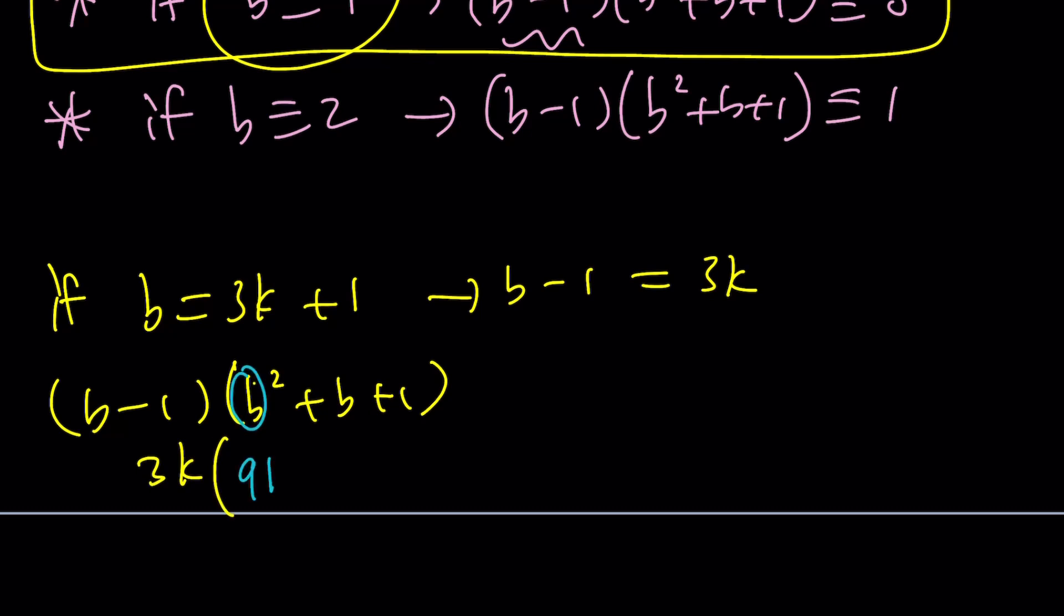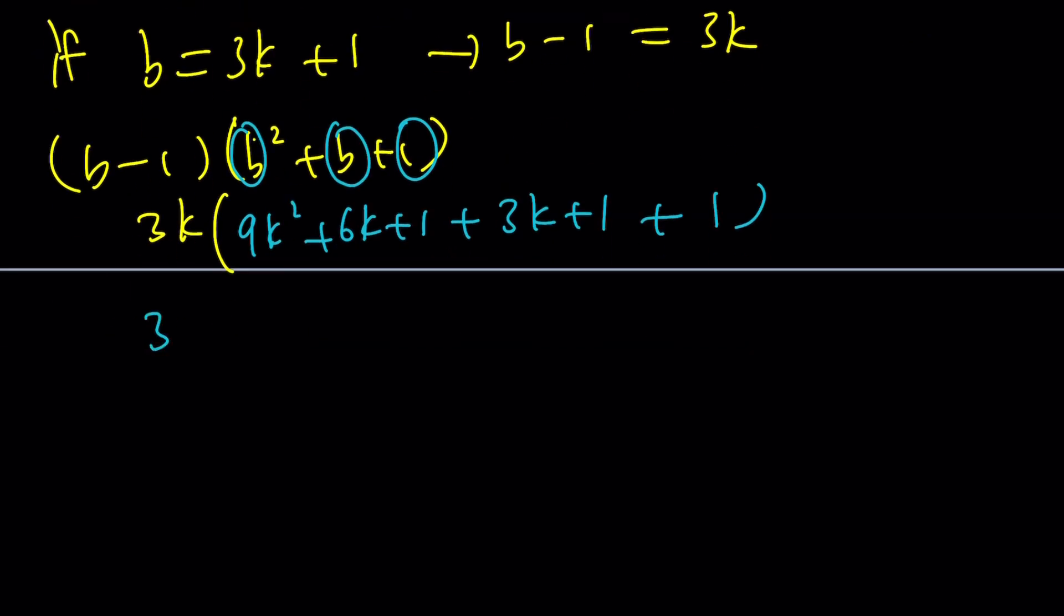So I'm going to square that: 9k² + 6k + 1. And then this b is going to be 3k + 1, and then plus 1, which is the one at the end. So this product is going to be 9k² + 9k + 3.